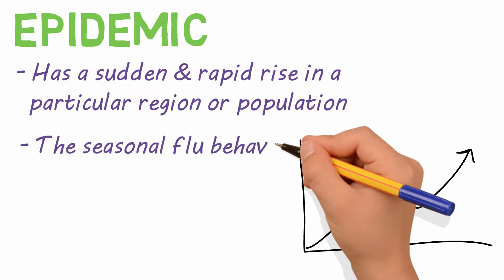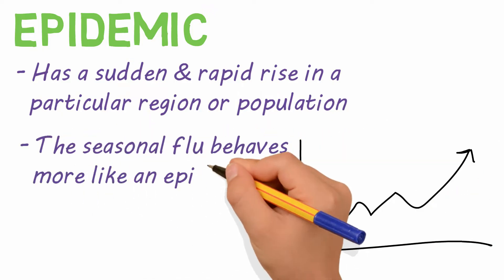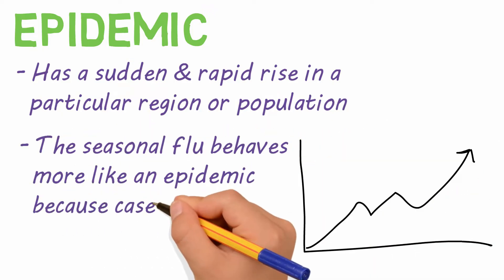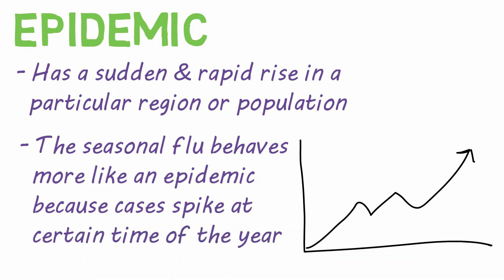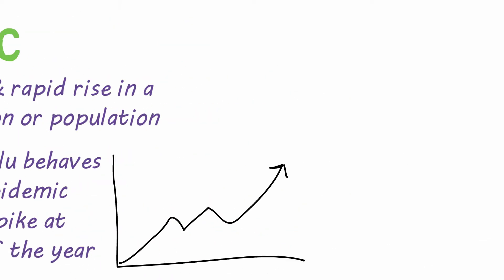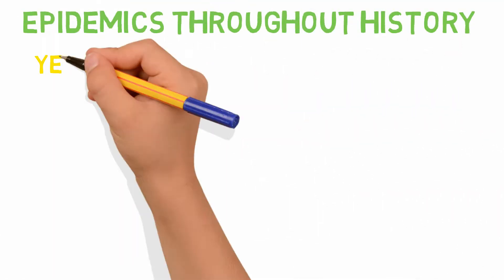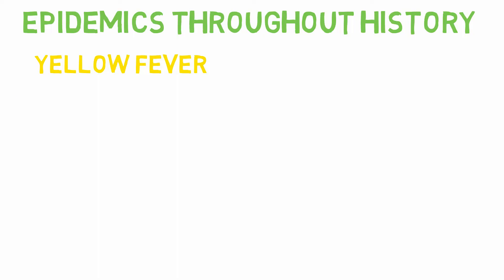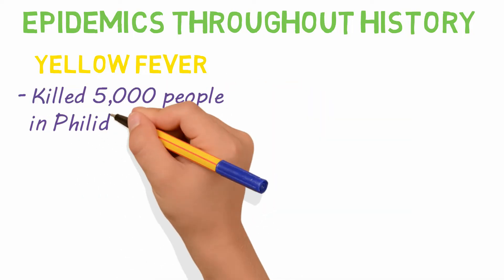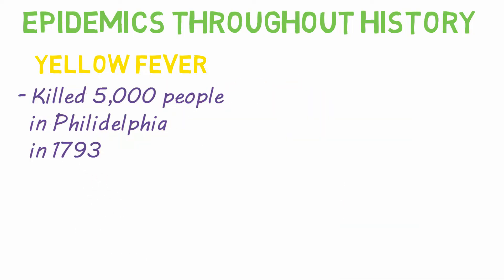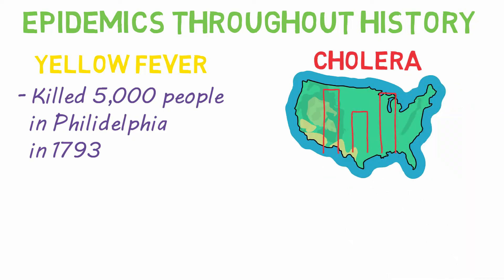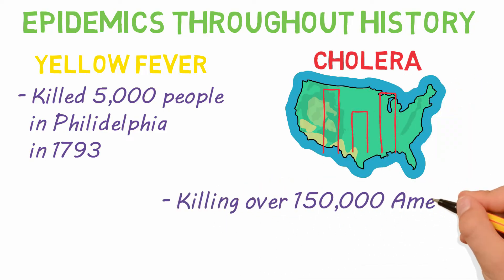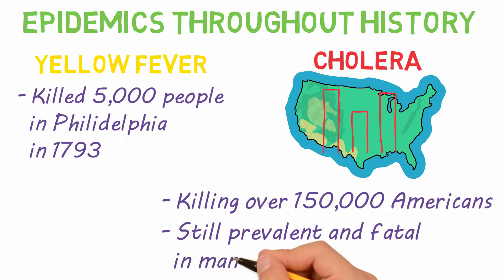The seasonal flu behaves more like an epidemic because cases spike at certain times of the year. Other epidemics throughout history include yellow fever, which killed 5,000 people in Philadelphia in 1793, and cholera, which hit the U.S. in three waves, killing over 150,000 Americans, and is still very prevalent and fatal in many parts of the world.